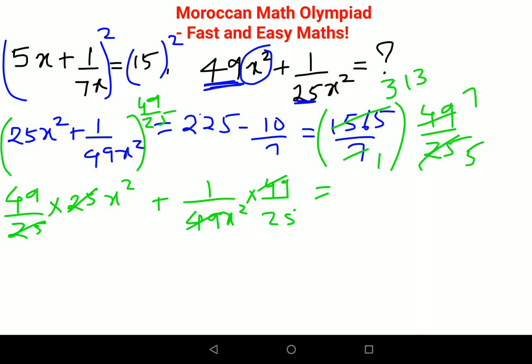So basically you can say on your left-hand side you are left with 49x square plus 1 upon 25x square, and this is now coming out to be 313 into 7, that gets you 2191 upon 5.